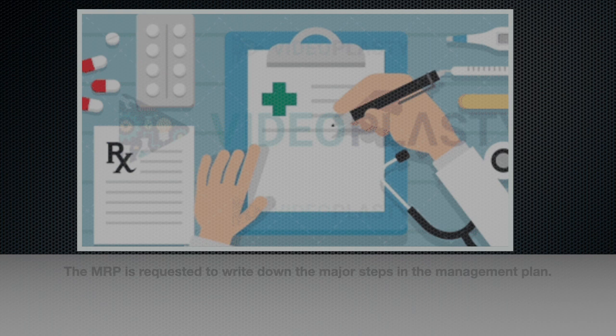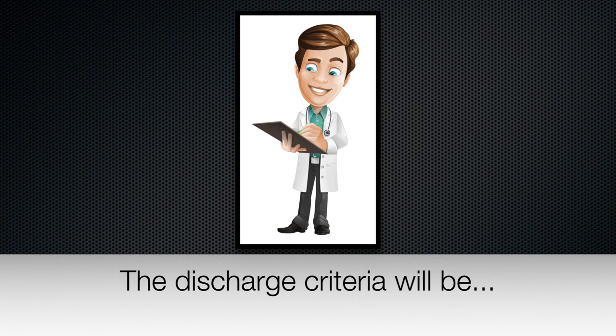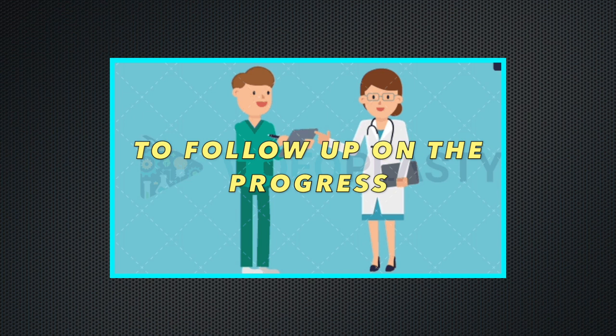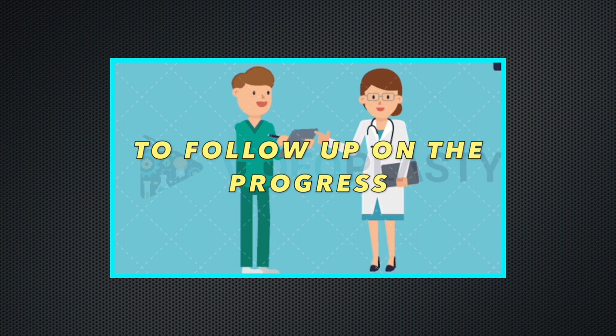The MRP is requested to write down the major steps in the management plan within 24 hours during the patient admission. The discharge criteria will be clarified and validated by the consultant in charge prior to the commencement of the CLD plan. Meanwhile, the nursing team will work together with the MRP to follow up on the progress.